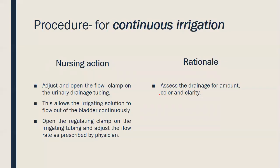Next is continuous irrigation. As the name suggests, the solution is continuously delivered. Open the flow clamp on the urine drainage tubing; this allows the irrigating solution to flow out of the bladder continuously. The regulating clamp on the irrigating tubing controls the flow rate as prescribed by the physician. That is the continuous irrigation process — the clamp is released and solution flows continuously at the prescribed rate.